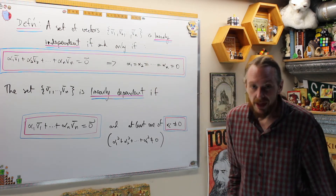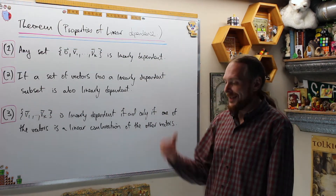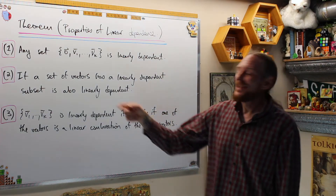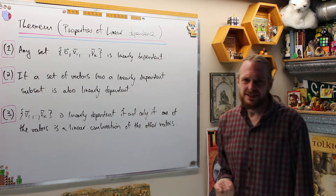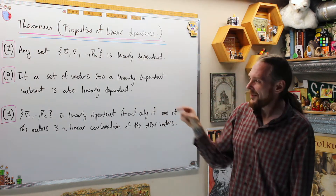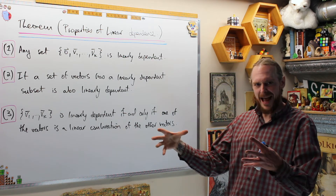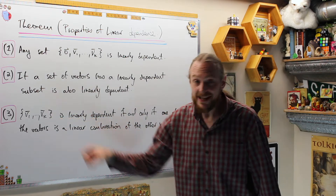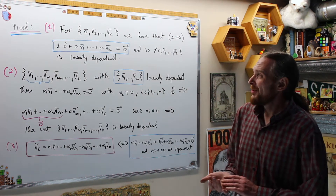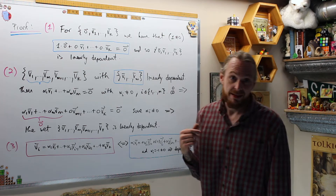Let's list a few properties and then get into basis and dimension for a line, a plane, and space. We're going to do three properties of linear dependence. Property 1 says if the zero vector is in a set of vectors, that set is always linearly dependent. Property 2 says if a set of vectors has a linearly dependent subset, then that set itself must also be linearly dependent. Property 3 says a set of k vectors is linearly dependent if and only if one of those vectors can be written as a linear combination of the others.